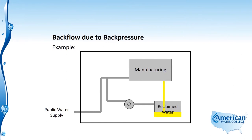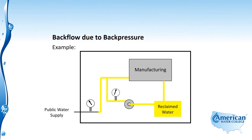During the manufacturing process, their water gets reclaimed and pumped back to the process so they're reusing their water in the system. This works out well as long as the pressure of the public water supply is greater than the pressure of the reclaimed water system. If the public water system pressure drops, you'll have backflow due to back pressure. So those are two examples of backflow due to back pressure.